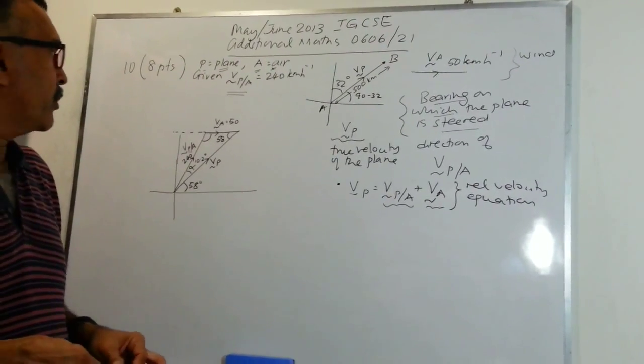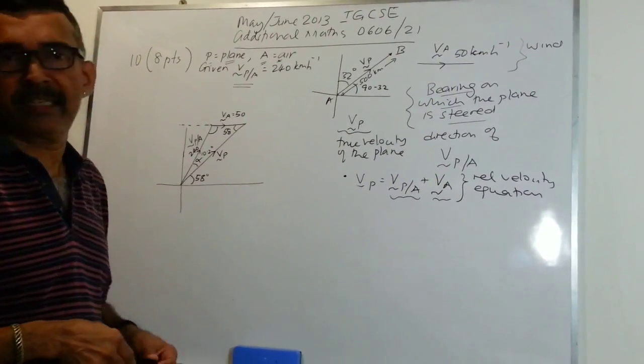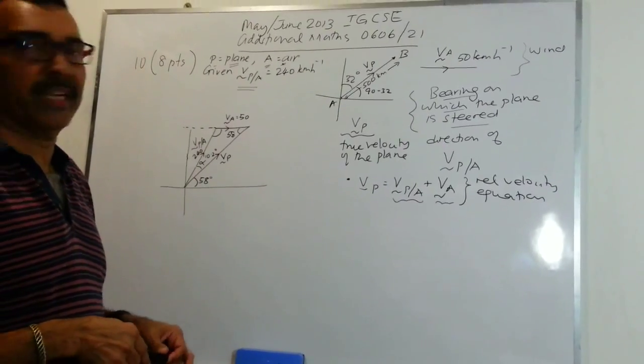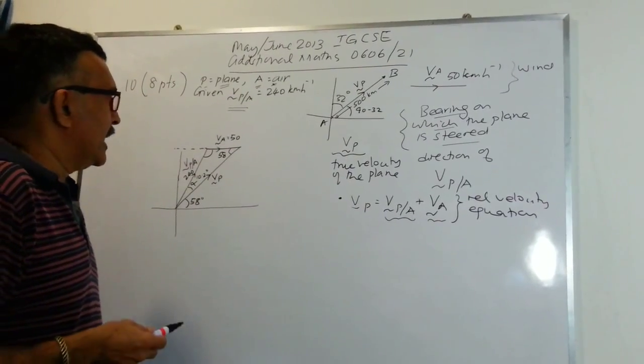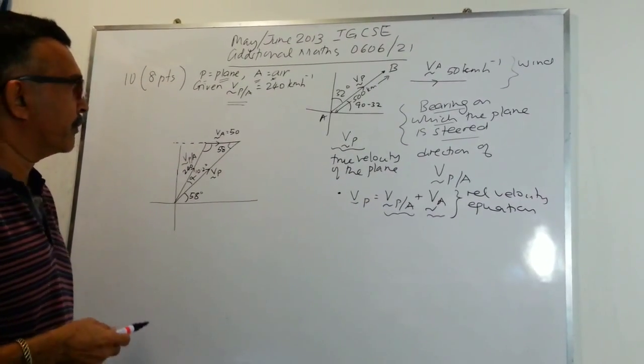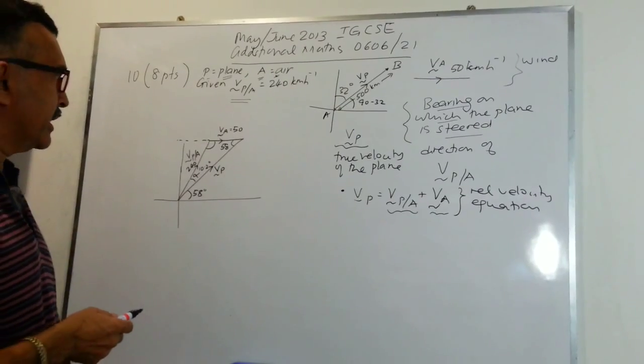In the second part of the problem, we are asked to find the time of flight to the nearest minute. Let's use the values that we had in the earlier part.